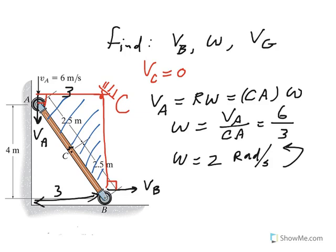Then I can go ahead, after I have determined omega, I can go ahead and find velocity of any points at this instant. So for example, velocity of B is what I'm looking for. So that would be R omega. What is R? R now is from C to B.